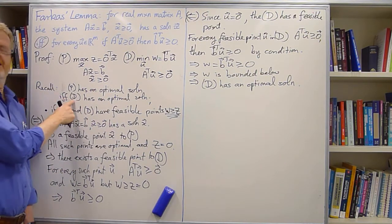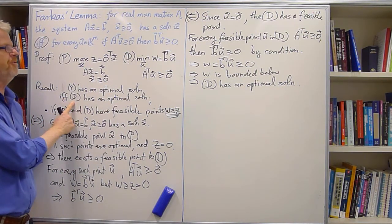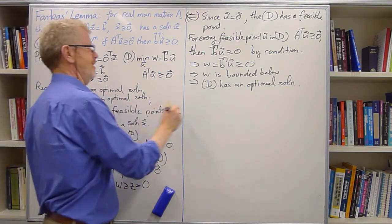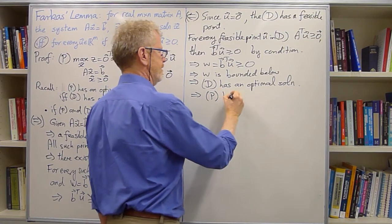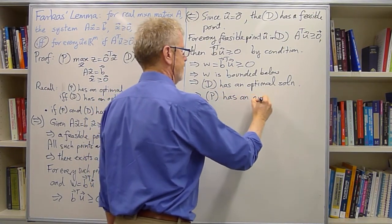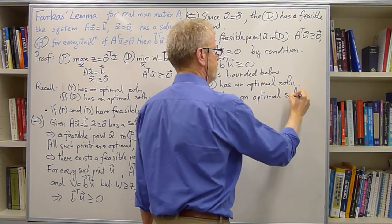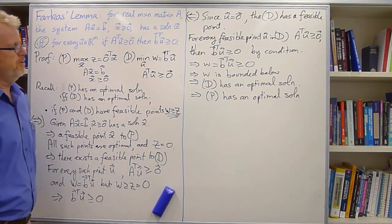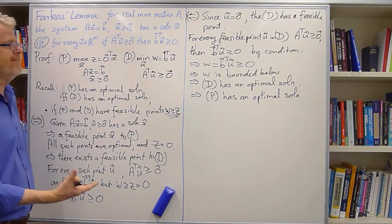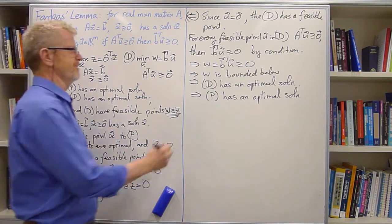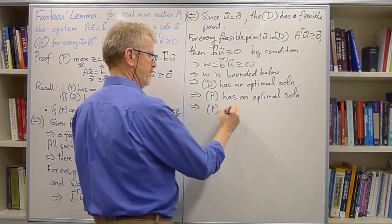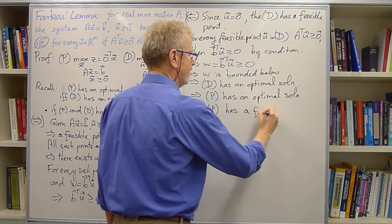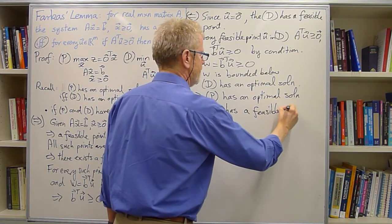All right, now we appeal back to this property of primals and duals. So if the dual has an optimal solution, then the primal also has to have an optimal solution. So P has an optimal solution, X star. But if it's got an optimal solution, that means it's got to have some feasible solutions. Some feasible points. So P has at least one feasible point.